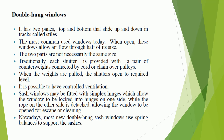Double hung windows have two panes — top and bottom — that slide up and down in tracks called stiles, and are the most commonly used windows today. When open, these windows allow airflow through half of their size. The two parts are not necessarily the same size. Traditionally, each shutter is provided with a pair of counterweights connected by cord or chain over pulleys; when the weights are pulled, the shutters open to the required level, allowing controlled ventilation.